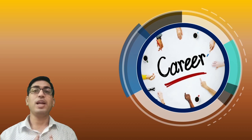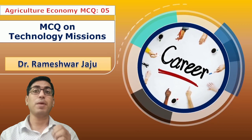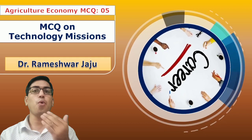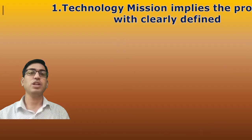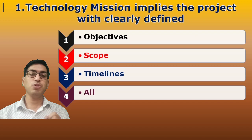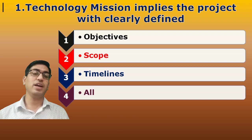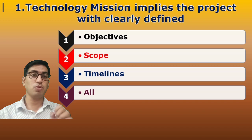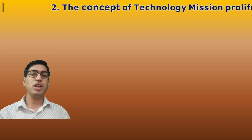Today we are discussing multiple choice questions on Technology Missions, including both new and old missions. First question: Technology missions imply a project with clearly defined — what? The options are objectives, scope, timelines, or all. The answer is all, because technology missions include objectives, scopes, and timelines, so we know what happens at start and end. Stated timelines are most important.